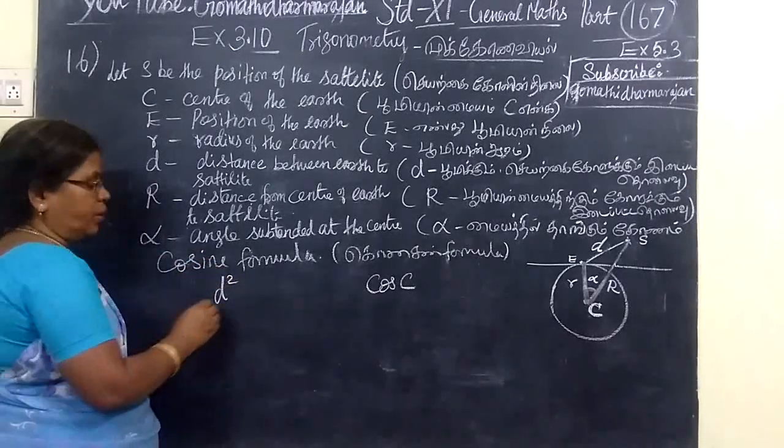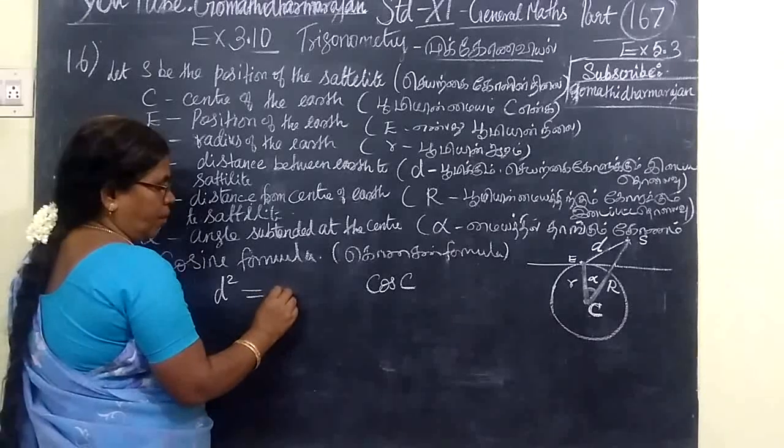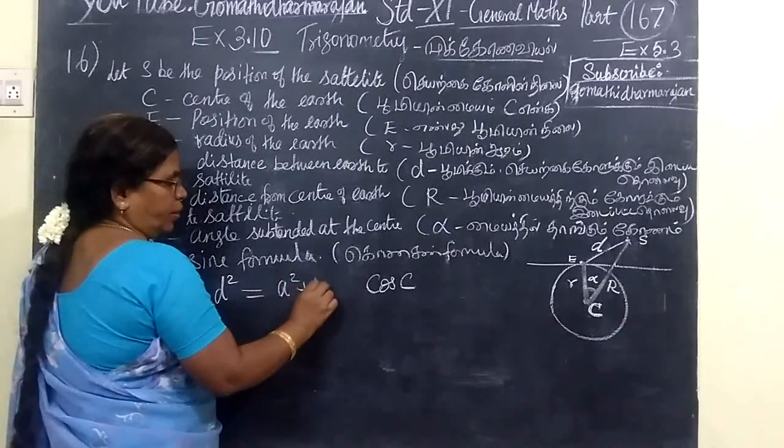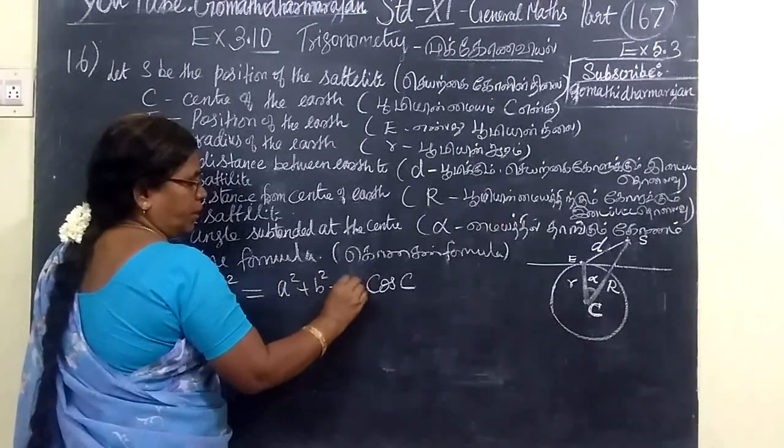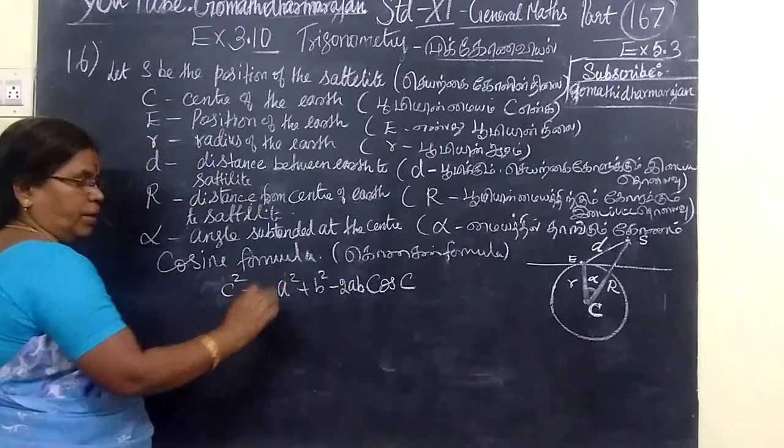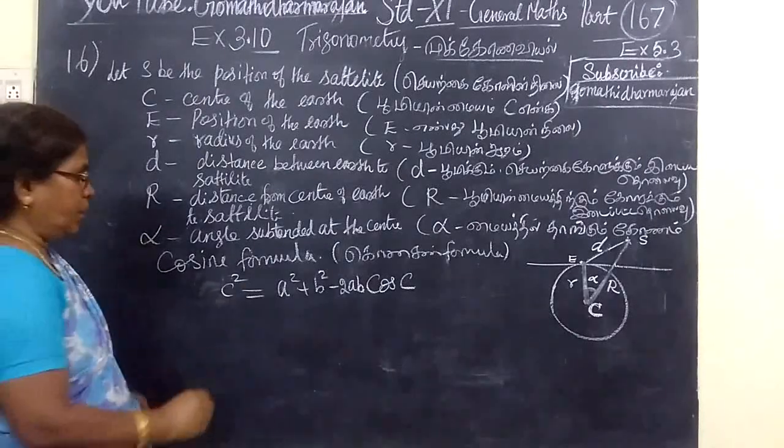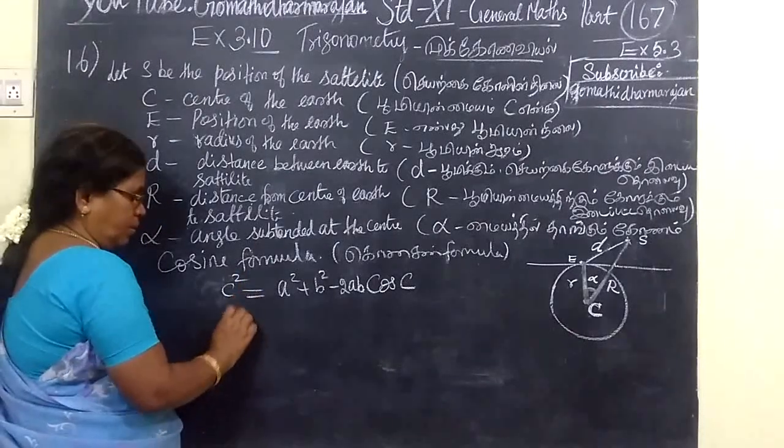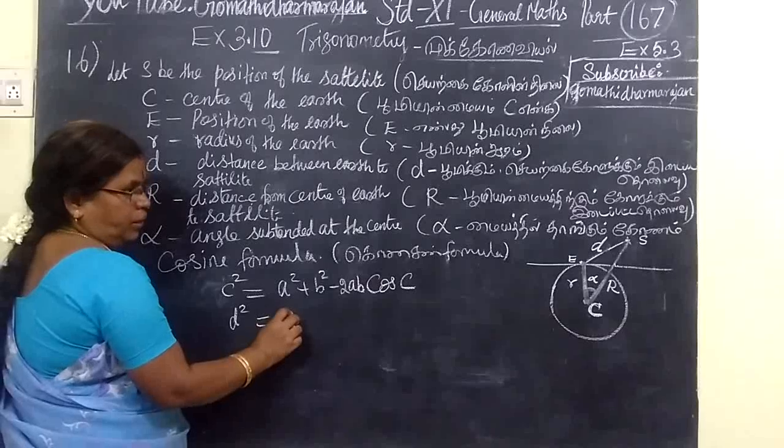This is D square. So we can see it. A square plus B square minus 2AB Cos C. This is D square. D square equal to A square plus B square minus 2AB Cos C. This is D square.